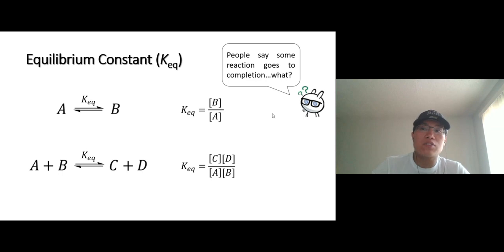You probably have heard that people say, oh, some reaction goes to the completion. What does that really mean? Here's the meaning of it. Let's say if an equilibrium, because the first one right here, has an equilibrium constant of 100.